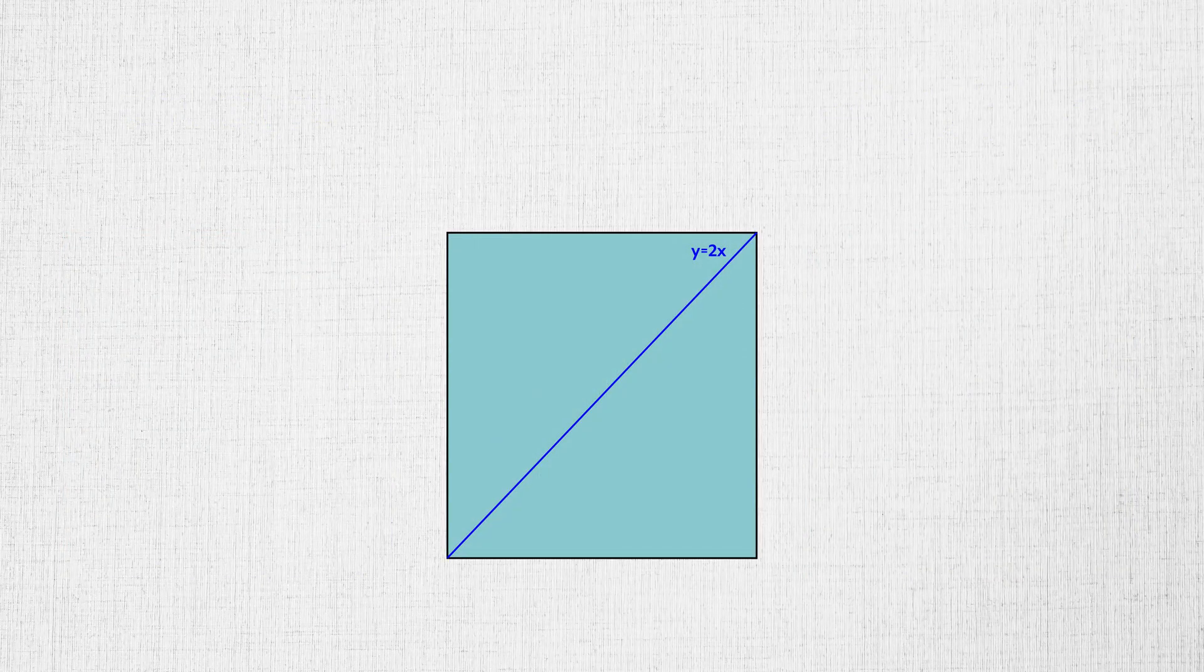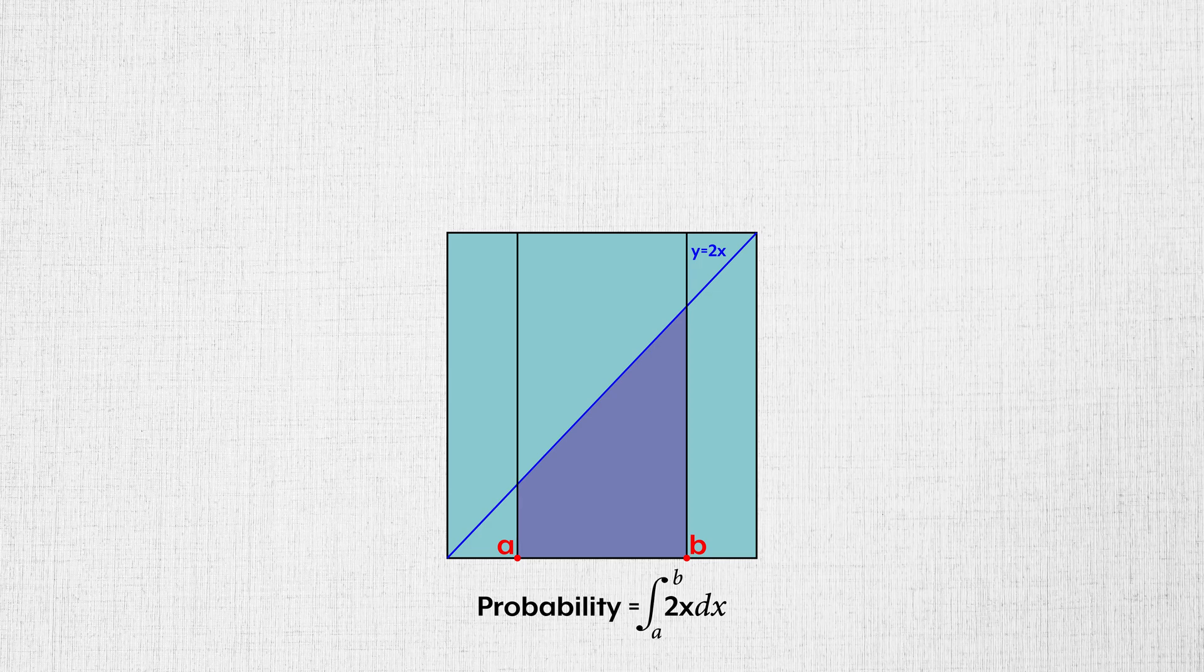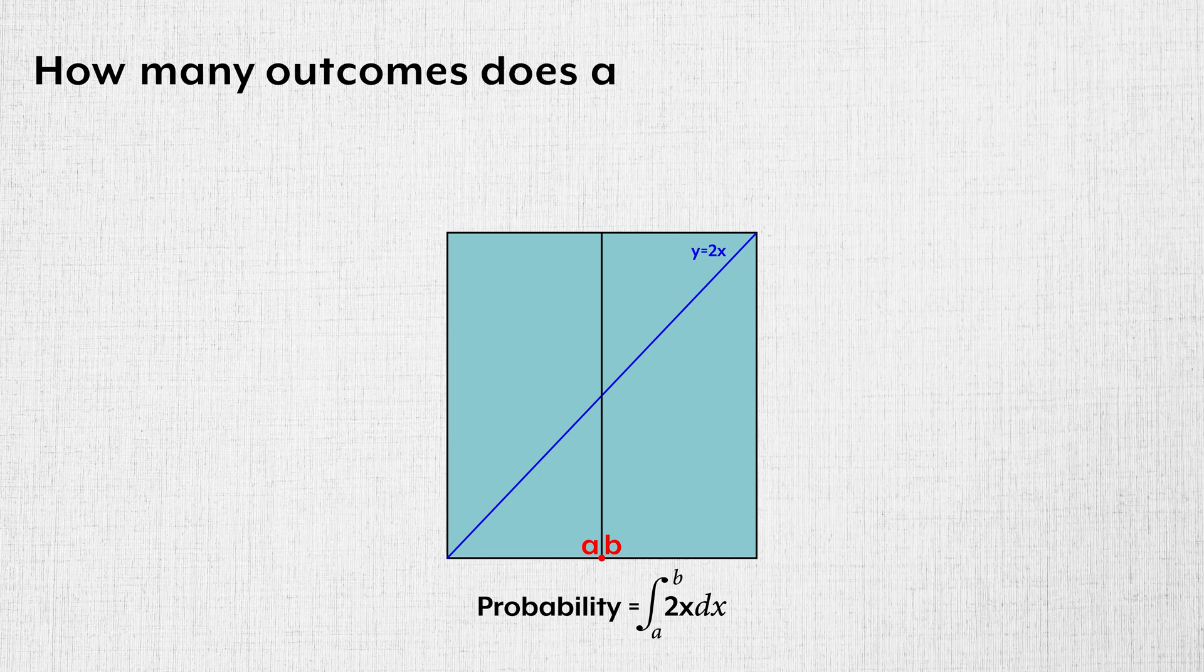Let me conclude by returning to the dartboard paradox. Probability is calculated as the area under the probability density function within a specified range. As that range gets smaller, outcomes are removed. If we take this process to the limit, that range has zero width. So how many outcomes does a zero width range include?